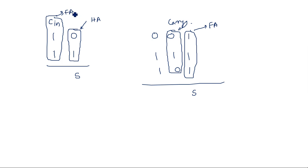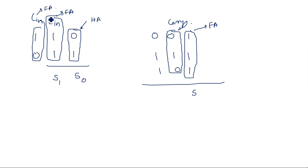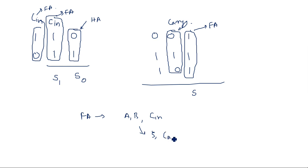So in a full adder, A and B are the original data inputs and Cin is the carry input from the previous stage. The full adder produces two outputs: sum and carry out. The carry out then feeds into the next succeeding stage as its carry input. Thank you.